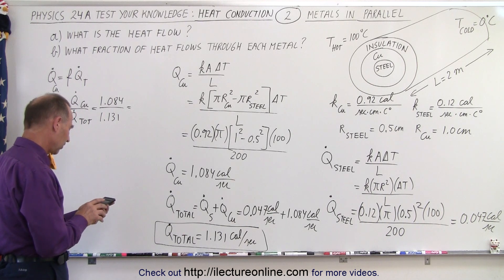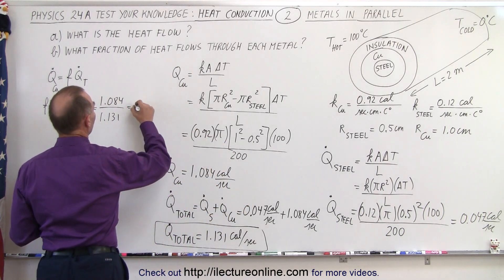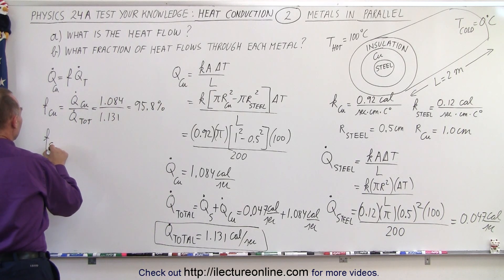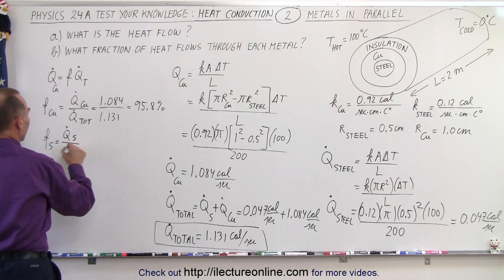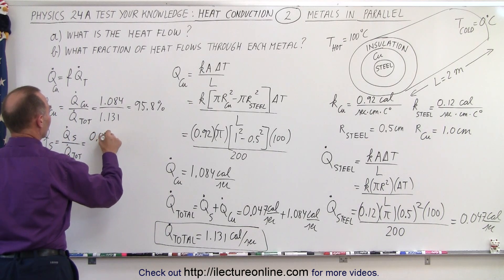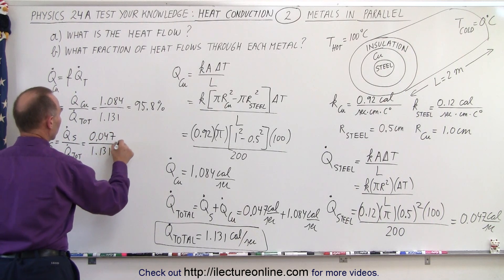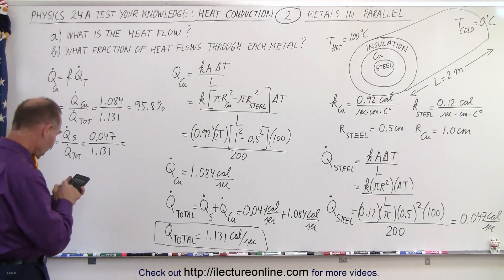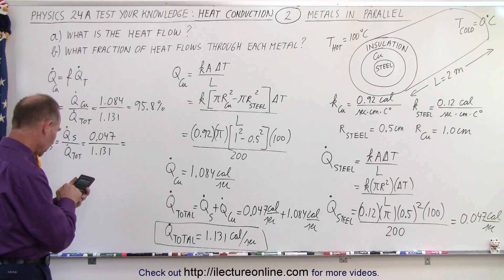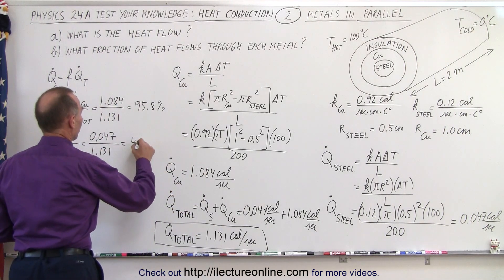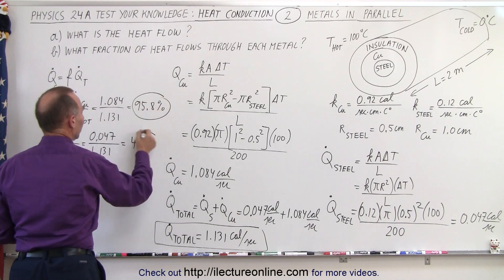1.084 divided by 1.131. Yeah, it's close enough. I would say that's about 0.958, so 95.8 percent. And we do the same for the fraction of the steel, that's equal to the q dot for the steel divided by q dot total, which is equal to 0.047 divided by 1.131. And let's see, obviously that should be the remainder of 4.2, but it's always a good thing to check. So 0.047 divided by 1.131. And sure enough, 4.2 percent. 4.2 percent is the fraction for the steel.